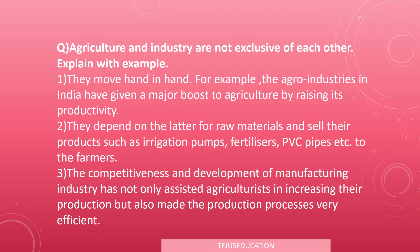The next important question: 'Agriculture and industry are not exclusive of each other — explain with examples.' They move hand in hand and cannot be separated. For example, agro-industries in India have given a major boost to agriculture by raising its productivity.